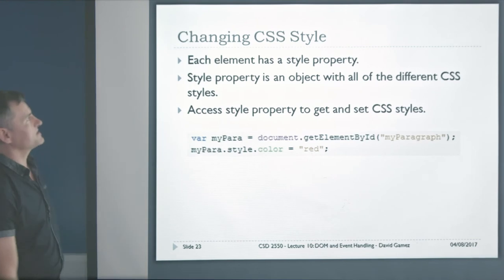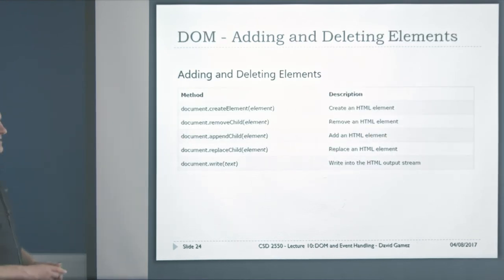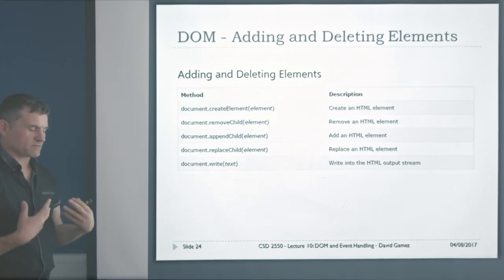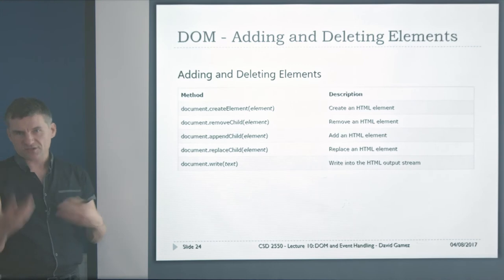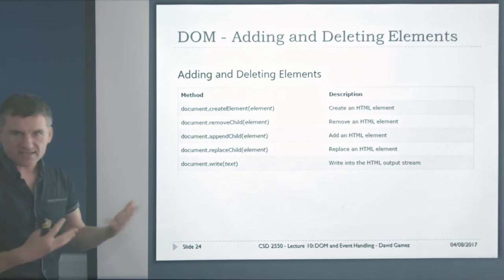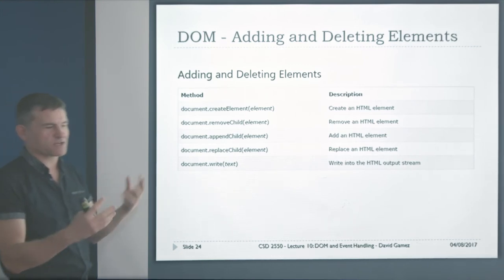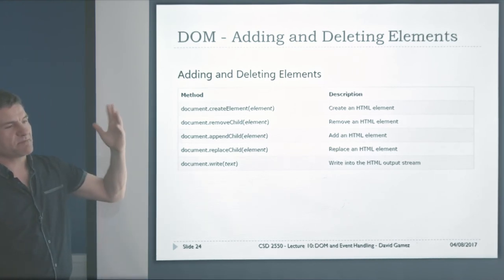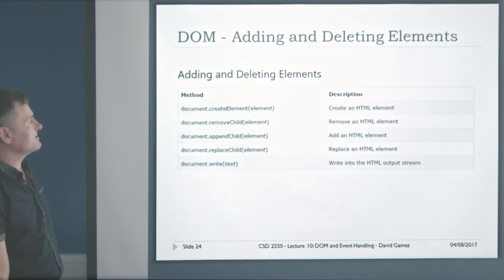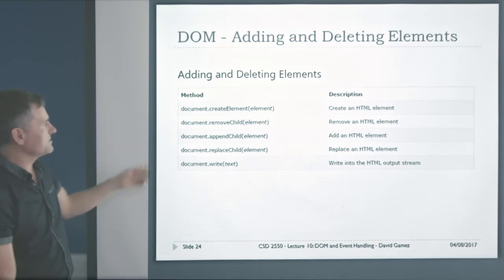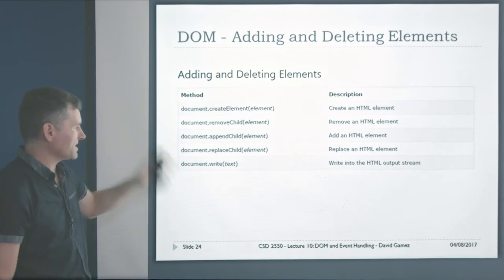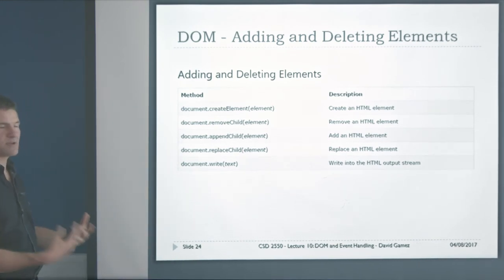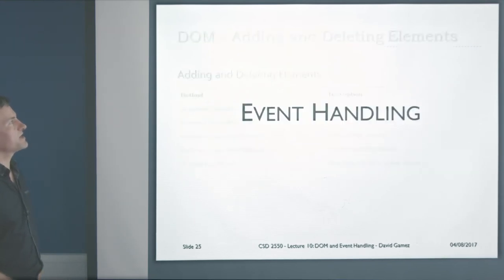So far we've accessed HTML elements, changed their contents, and changed their attributes. We can also add and delete elements — we can manipulate the tree structure as we like. We could build a whole web page from scratch with an empty page and add all components dynamically. Methods include createElement, removeChild, appendChild, replaceChild, or just write to the output stream. We can do whatever we like to the document object model within JavaScript.